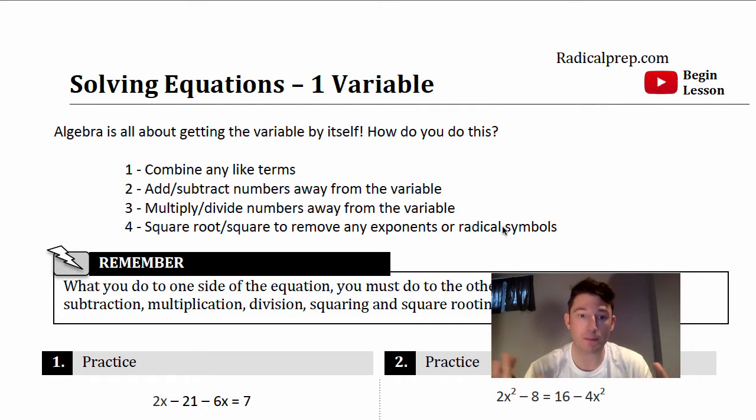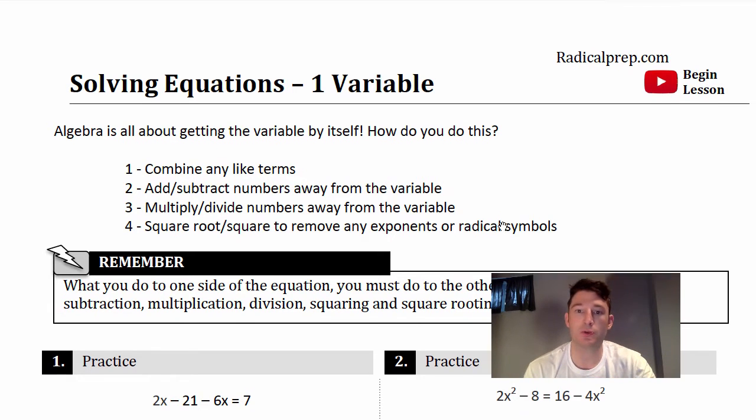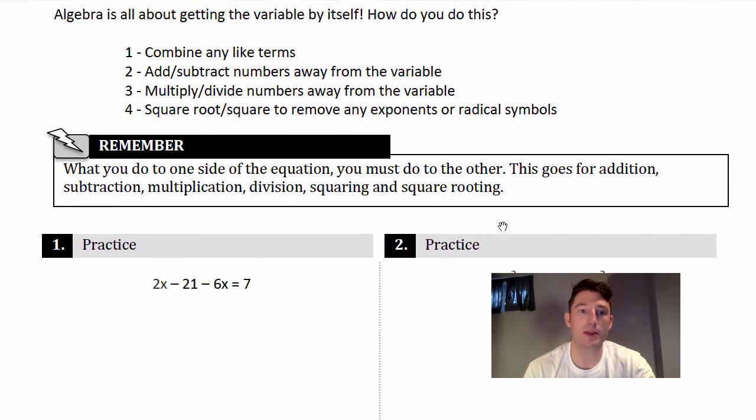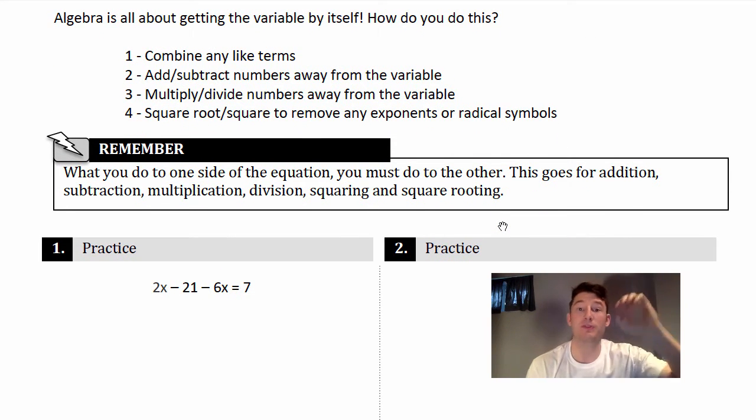We'll go through it. So let's dive right in. How do you solve one-variable equations? You probably learned this in school, but I'll just kind of review the steps with you. Algebra is all about getting the variable by itself, so the variable on one side, the numbers on the other. How do you do that?